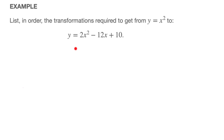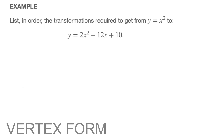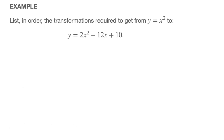In order to list the transformations, we need to rewrite this parabola's equation in its vertex form. Every parabola out there can be rewritten in the form y equals a times (x minus h) squared plus k. That's known as the vertex form of a parabola's equation.